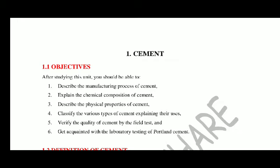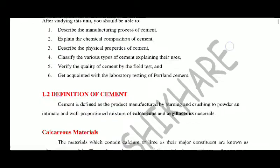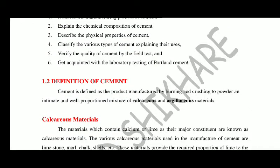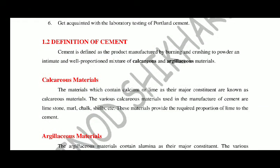Today we do the revision. After studying this topic, the student will be able to describe the manufacturing process of cement and the chemical composition of cement. The student will be able to describe the physical properties of cement, classify the various types of cement explaining their uses, verify the quality of cement by different tests, and get acquainted with the laboratory testing of Portland cement.